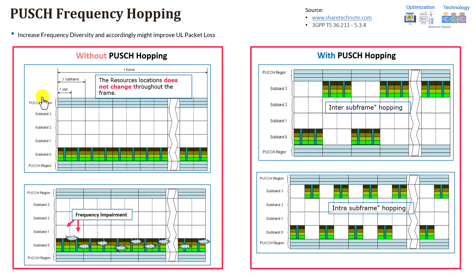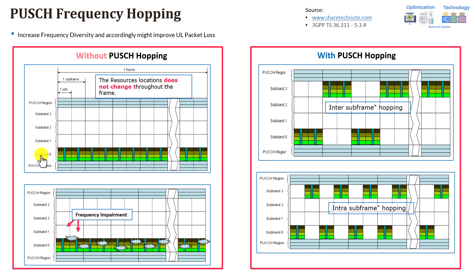Without hopping, you can see that the sub-band in the frequency domain has all resources allocated at, for example, sub-band zero across the entire frame. There is no change in the resource allocation throughout the frame. In case you have interference at this particular area — for example, at sub-band zero — you would be interfered all the time. This is where frequency hopping can provide gain through frequency diversity.